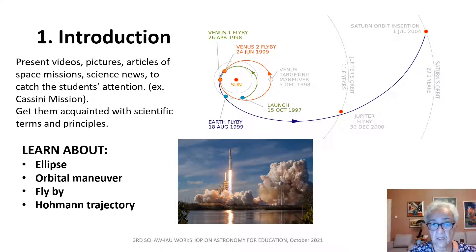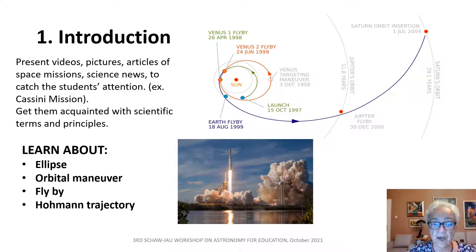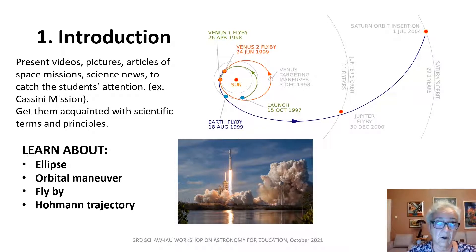Here you see the trajectory of the Huygens-Cassini mission, and you can also see that in this mission there are many new notions for the students, like orbital manoeuvre, flyby, Hohmann trajectories — and also we have to understand why a space orbit is always an ellipse.